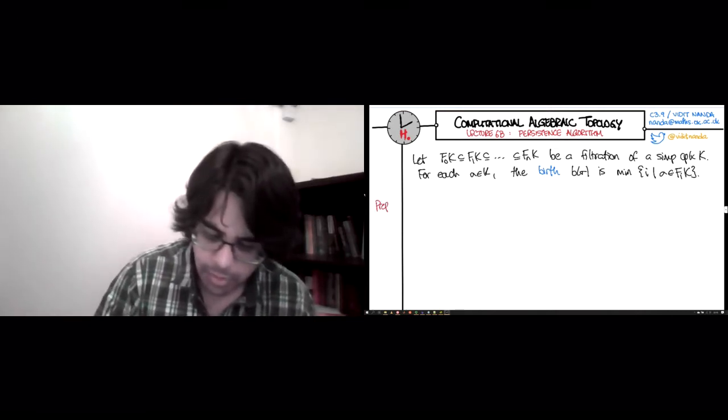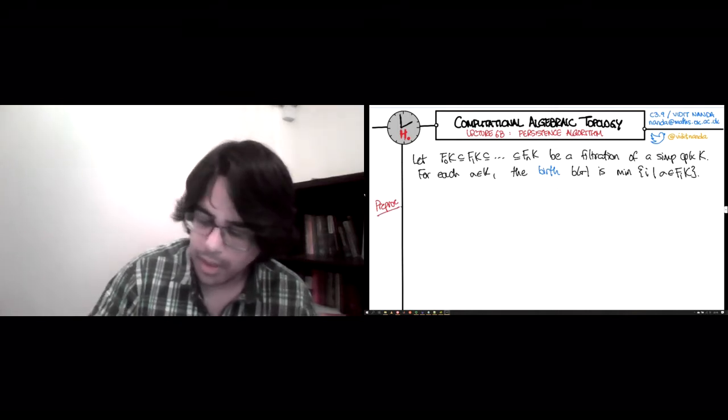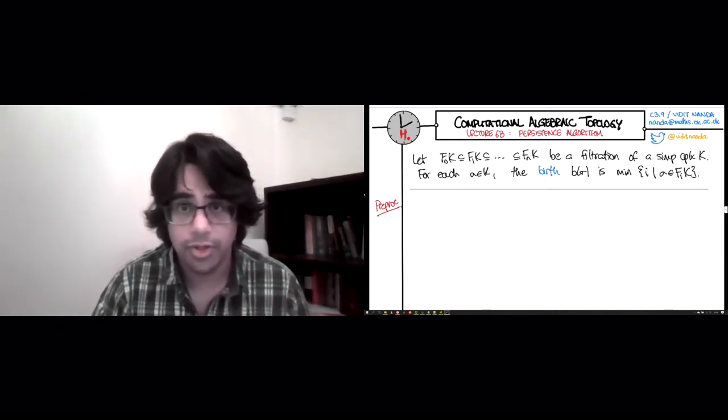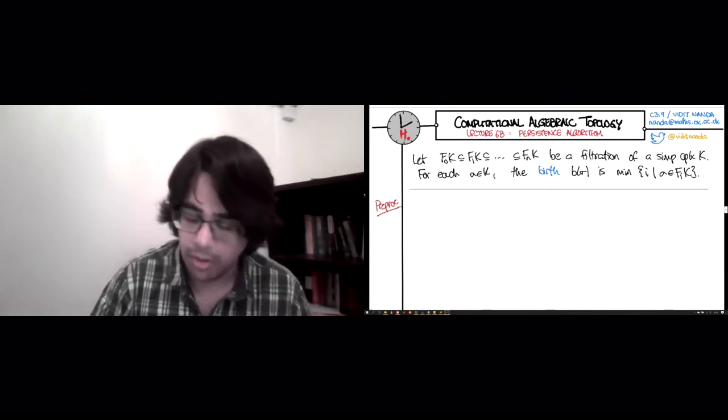So the first thing we need to do is preprocess the simplices. So here's the preprocessing step. It requires just to keep things well organized in terms of this birth function that's defined in all the simplices.